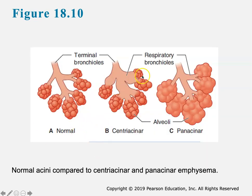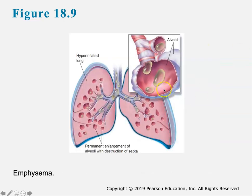In centriacinar emphysema, the terminal bronchioles and respiratory bronchioles are inflamed with lots of mucus, but the alveoli appear relatively intact. In panacinar emphysema, what's affected are the actual alveoli - they become overstretched, which damages the wall of the alveoli and they can collapse and degrade completely. This is the hyperinflated lung with permanent enlargement of the alveoli and destruction of the septa - these alveoli become enlarged and that hyperinflatedness changes the entire elasticity of the wall. It's like blowing up a balloon too many times - the integrity of the wall becomes compromised.